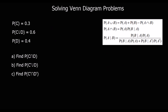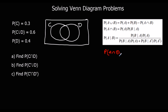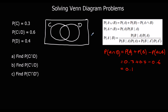Here's another question with circles C and D. This time we've been given the union and not the intersection, so we use the rearranged formula: P(C∩D) = P(C) + P(D) − P(C∪D) = 0.3 + 0.4 − 0.6 = 0.1. So the intersection section is 0.1.